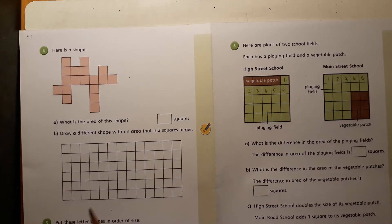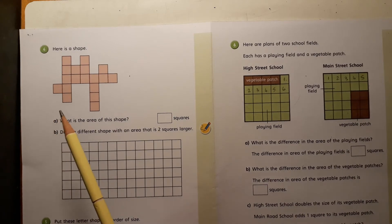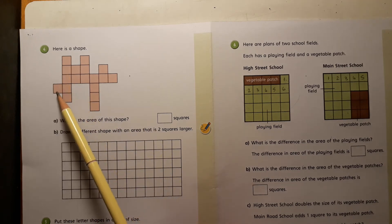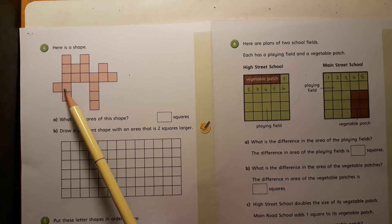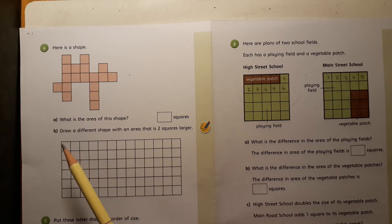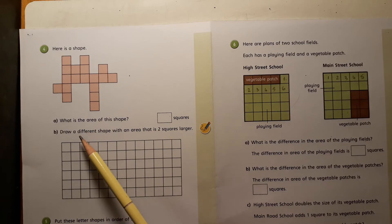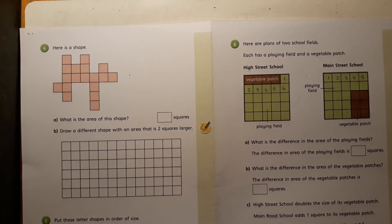And now for the second page without the answers. You just need to make sure you read the question. Be accurate in your counting, so you can put the numbers in to make sure you don't miss any out. So you calculate the area and then draw a different shape with an area that is two squares larger.